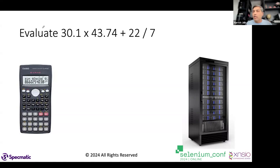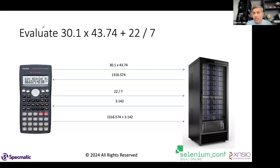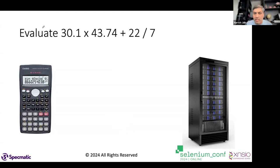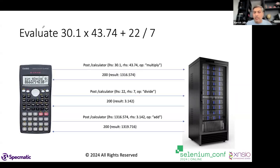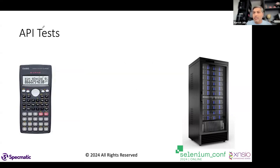Let's imagine I want to evaluate the expression: 30.1 × 43.74 + 22 ÷ 7. I might first evaluate the multiplication, then the division, then add the two results for the final answer. I can represent this as an API call — posting to /calculator with a left-hand side, right-hand side, and an operator.